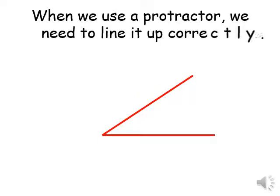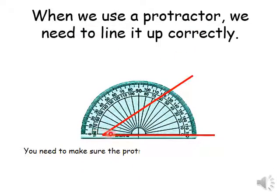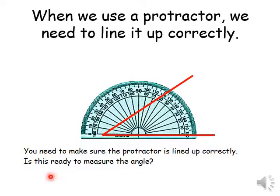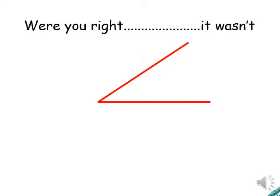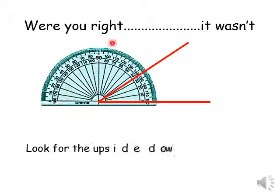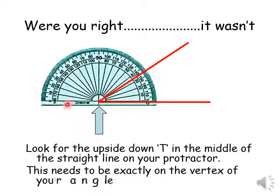How to use the protractor: we have to line it correctly — put the straight line on the angle. You have to make sure the protractor is lined up correctly. Can I measure this angle now? No, it's not ready because it's not on the vertex. The protractor is ready when we put the T-shape on the vertex and line it up along the side of the angle.